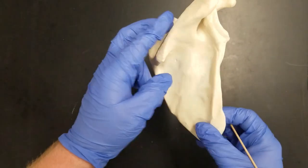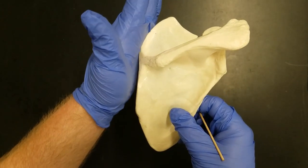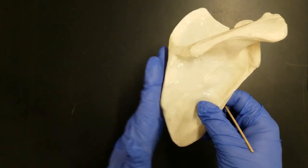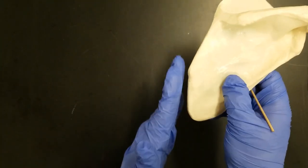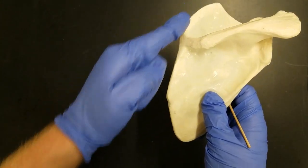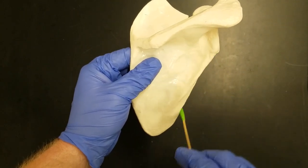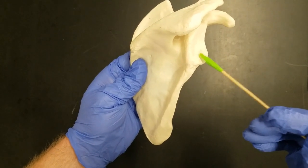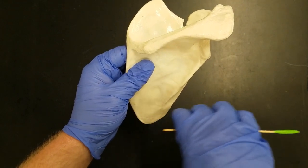Two more features that we need to mention on our scapula are the borders. Along this border, we call this the medial border. This edge points towards our spinous process of our vertebral column. It kind of looks like the blade of an axe, which is where we get the term shoulder blade from. This border over here is the lateral border. The lateral border has the glenoid cavity attached to it, or glenoid fossa. Lateral means that it points out away from the body.